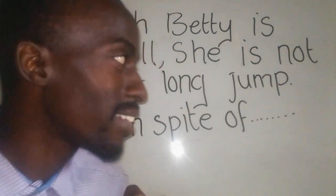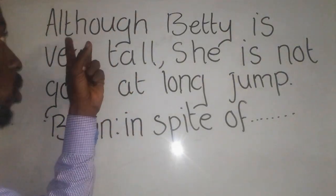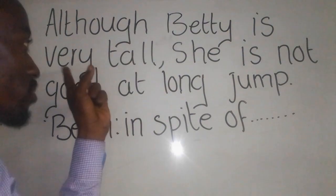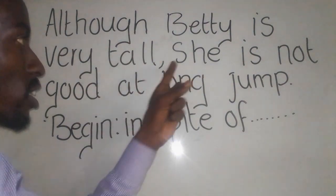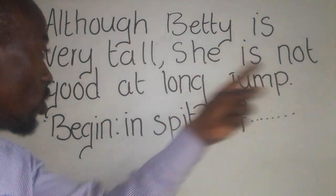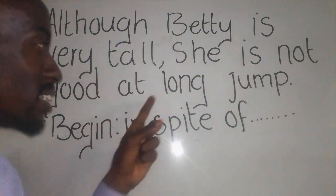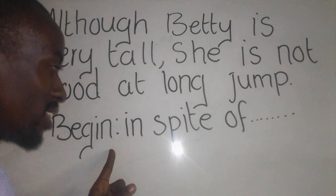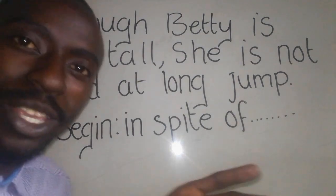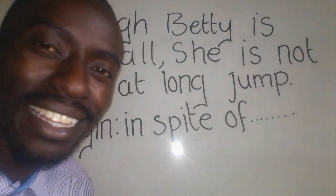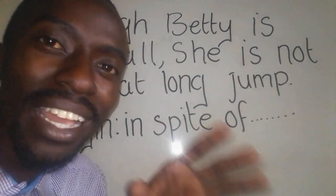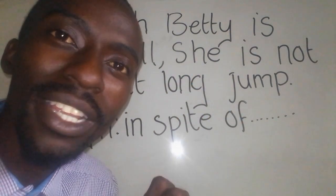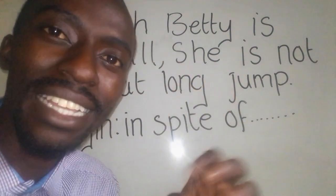Here is an English question that says: 'Although Beth is very tall, she is not good at the long jump.' Begin in spite of. You need to understand that here we are talking about a special type of rewrite known as contrast.